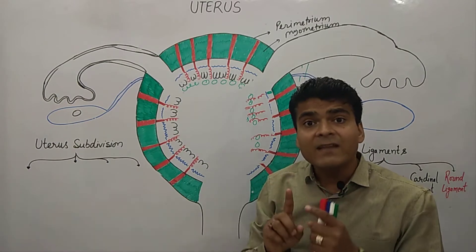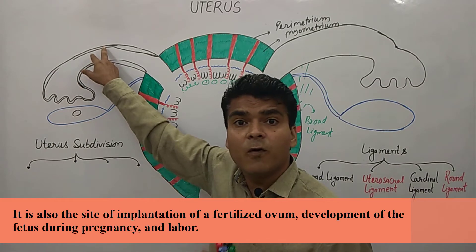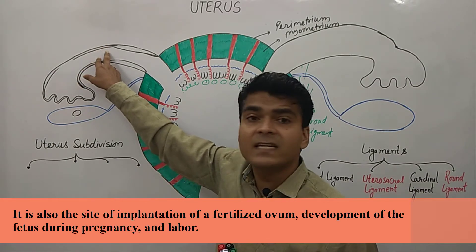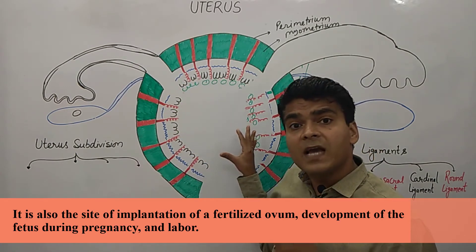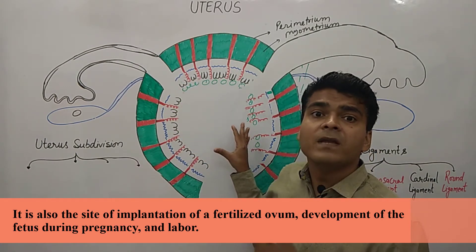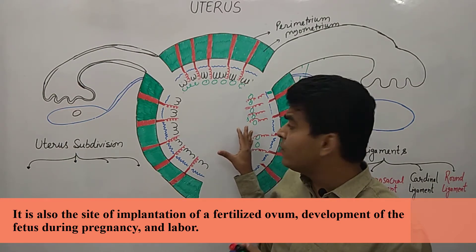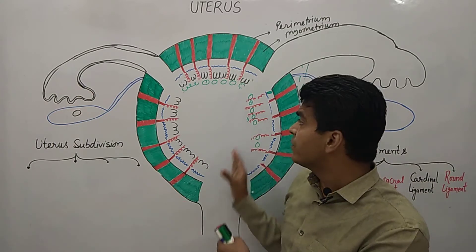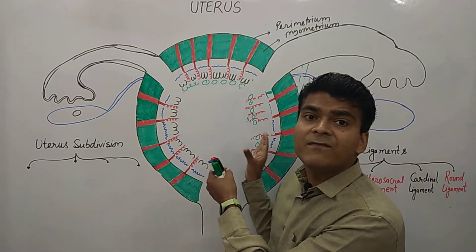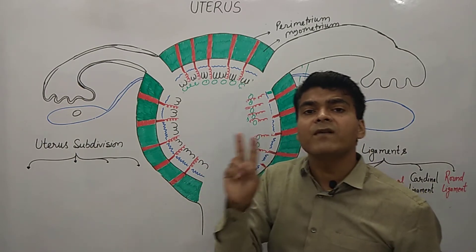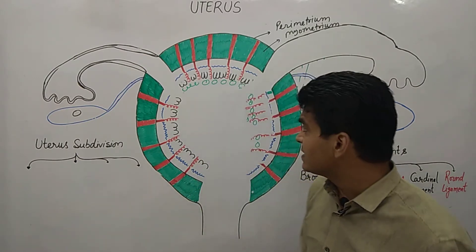The second function of the uterus is that after fertilization, the zygote will implant in the uterus. During pregnancy, the fetus will develop here, and at the end, delivery will occur through labor pain. So throughout the whole time of pregnancy, the uterus supports fetal development. These are the two important functions of the uterus.